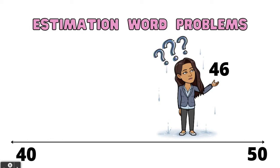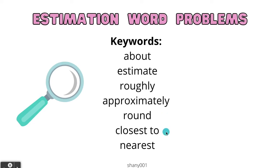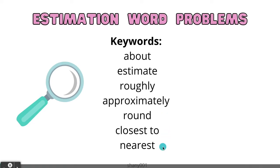Hello boys and girls. Today we'll be talking about estimation word problems. Let's get started. Here are some keywords you might see in a word problem: about, estimate, roughly, approximately, round, closest to, and nearest.